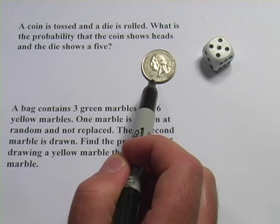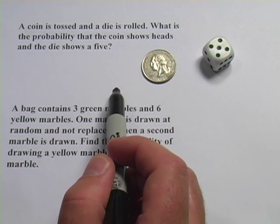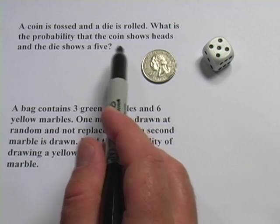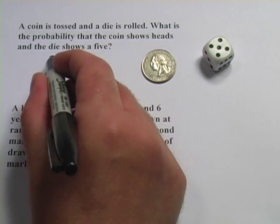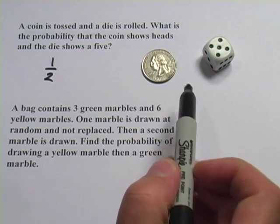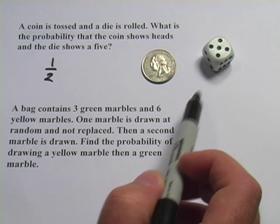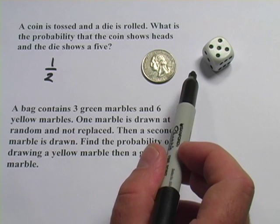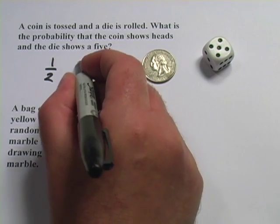If we were just going to flip this coin, there are two possible things that could happen, heads or tails. The probability that it's going to come up heads would be one possibility, so it's 1 out of 2. And then with the die, rolling any particular number on a 6-sided die is a 1 in 6 chance. There are 6 sides, the 5 is only on one of them, so that's a 1 in 6 chance.